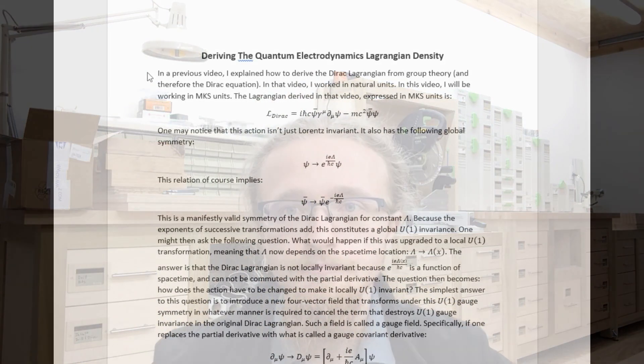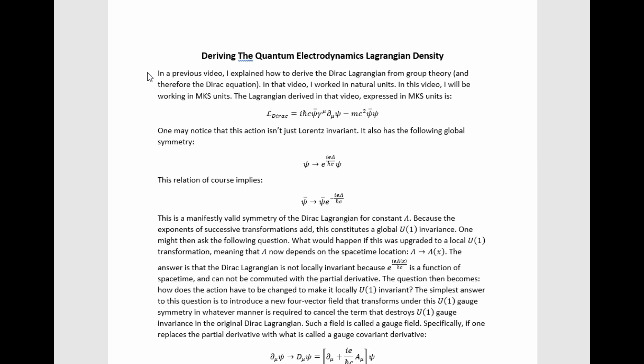Now here follows the math portion of this video where I explain the actual technical details of deriving the particular form of the quantum electrodynamics Lagrangian density. In a previous video, I explained how to derive the Dirac Lagrangian from group theory and therefore the Dirac equation from group theory because it simply is the equation in motion associated with that Lagrangian. In that video, I worked in natural units. In this video, I'll be working in MKS units. The Lagrangian derived in that video expressed in MKS units is this quantity here.